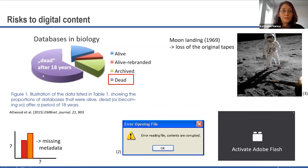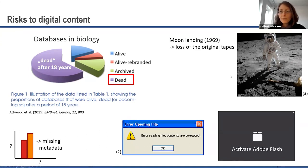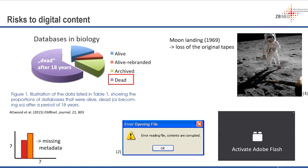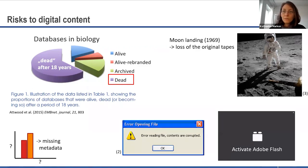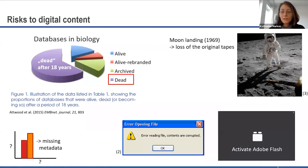Researchers looking at biology databases after 18 years found that the majority were dead — the data was no longer accessible or reusable. The original high-resolution Moon landing tapes were lost because they were probably overwritten as part of a normal tape-reuse workflow. In the lower left corner is the case of missing metadata: you can read the information in a file but don't know what it means, so research cannot use it. This is a topic in data curation and research data management.